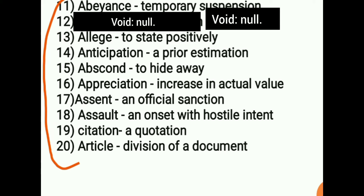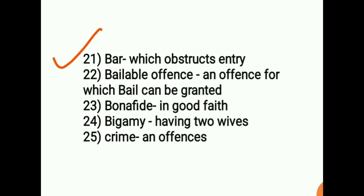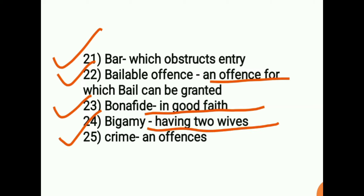A prior estimation is known as anticipation, and a division of a document is known as an article. Now, twenty-first is bar, which means that which obstructs entry. Twenty-second is bailable offense — it means an offense for which bail can be granted. Twenty-third is bona fide, which means in good faith. Its opposite is mala fide, which means bad intention or bad faith. Twenty-fourth is bigamy, which means having two wives.